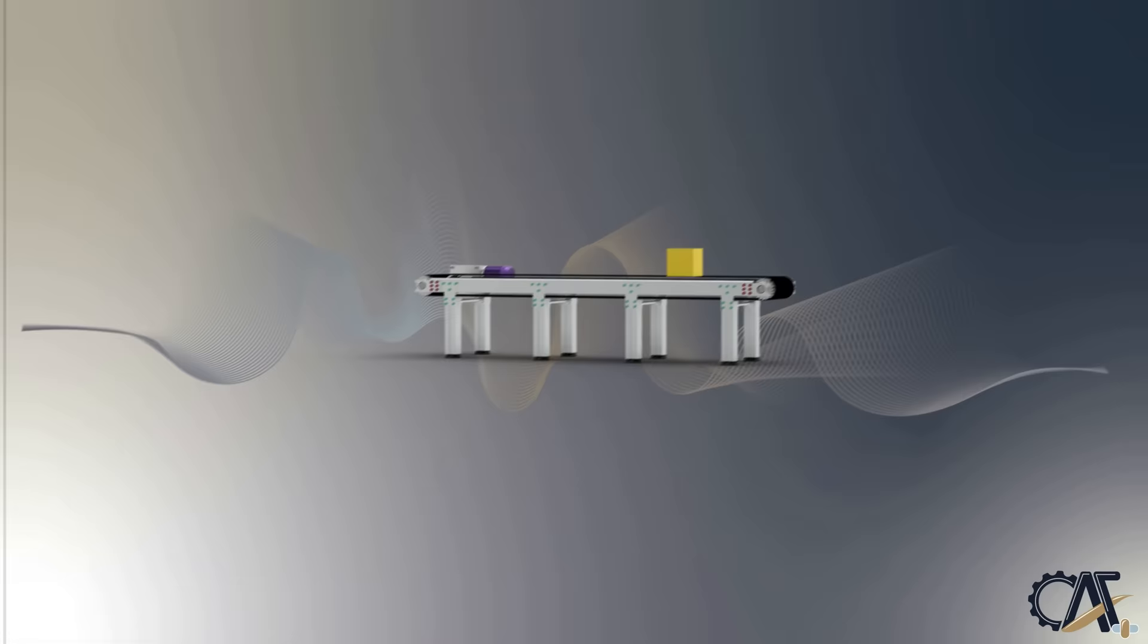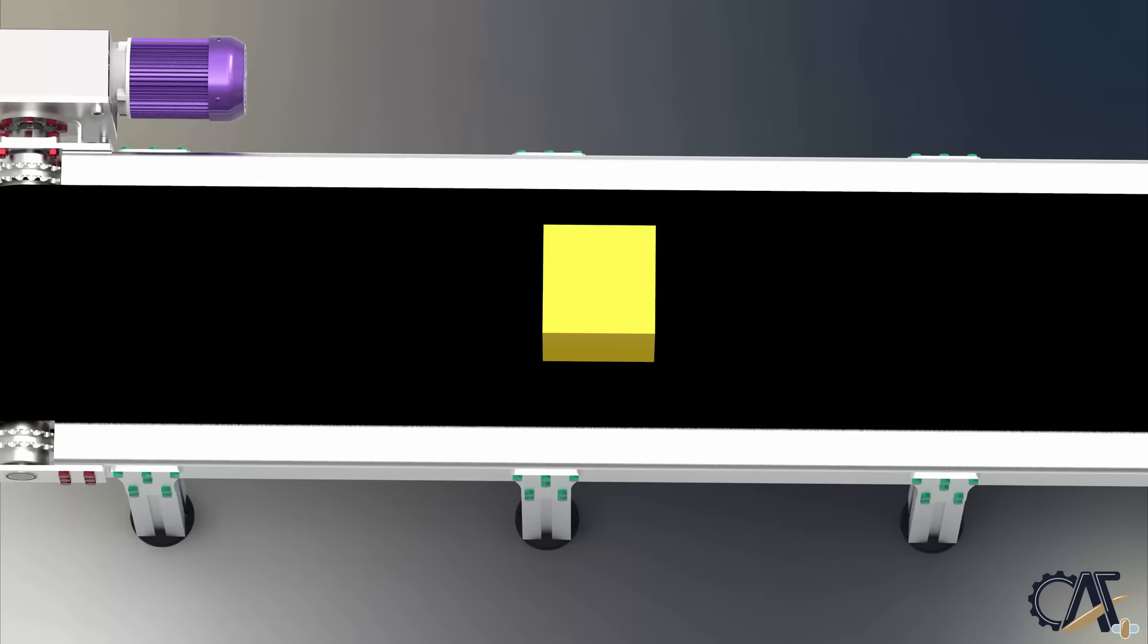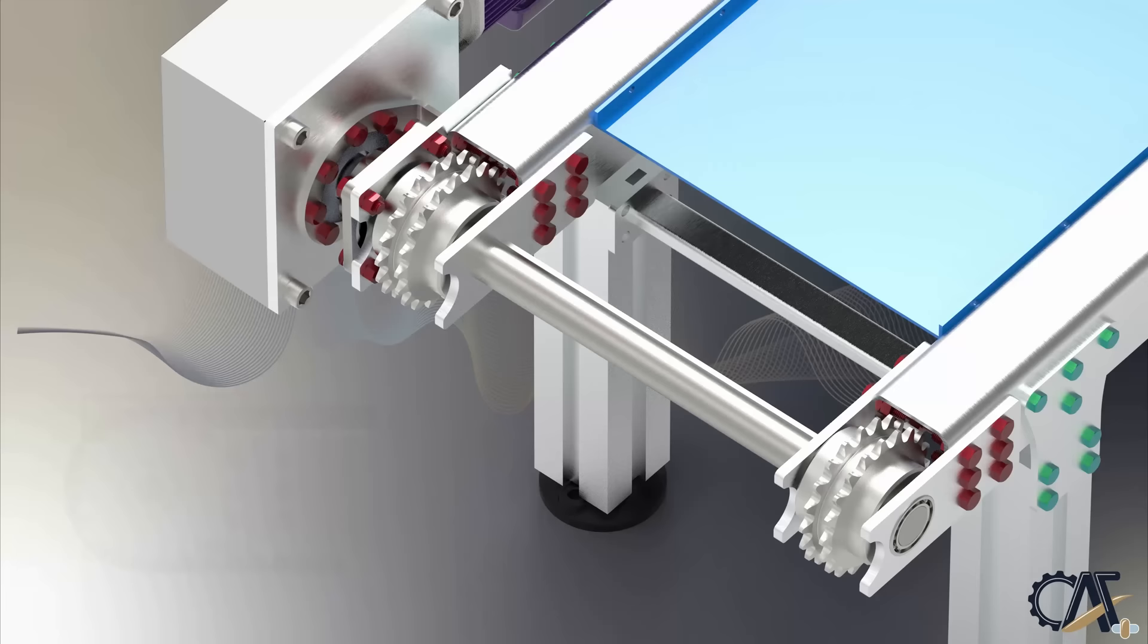Have you ever wondered how your luggage is delivered to you at the airport within minutes or how thousands of items are transported in a factory with minimal effort? Thanks to conveyor belts for making this possible. The belt on the conveyor is the platform for transportation, but what components enable it to deliver linear motion for its transportation?